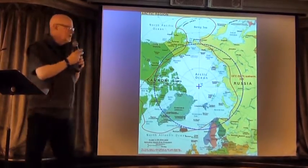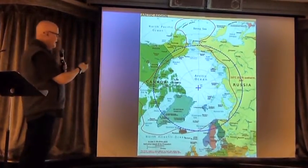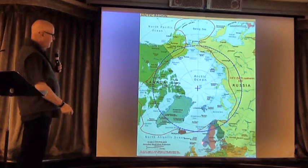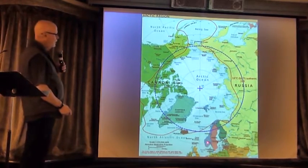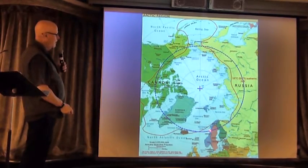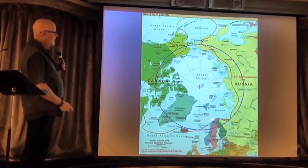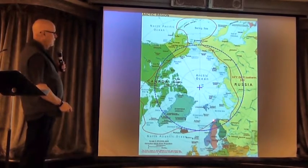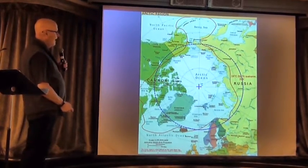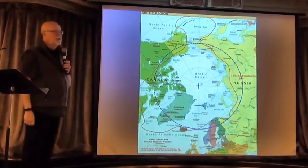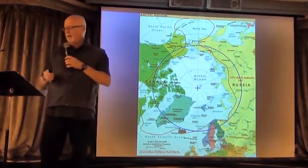This is the Arctic Circle. You can see down here — we are right about here, Norway. We will be crossing over the Arctic Circle and going all the way up to the North Cape, one of the northernmost ports of Norway. So we will be well within the Arctic Circle.